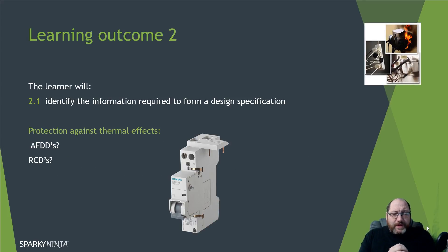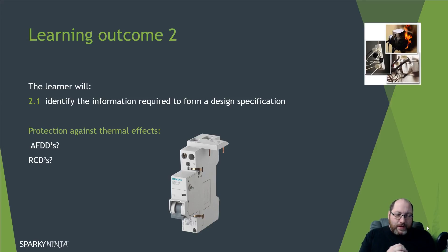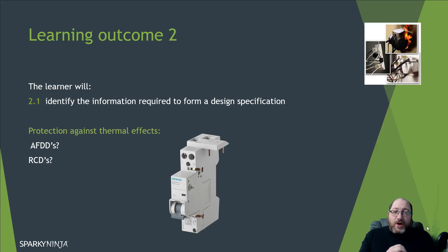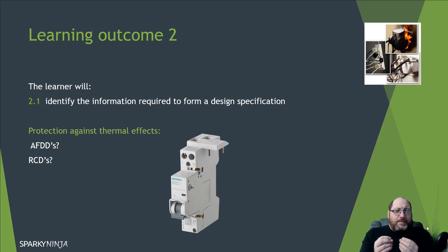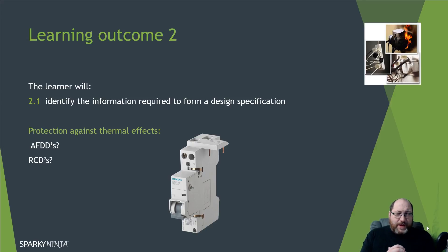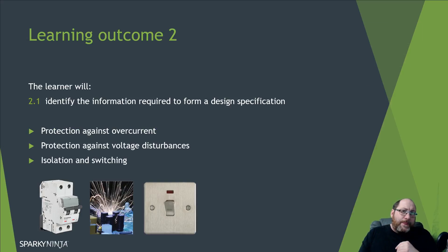We've also got to consider thermal effects. We have RCDs for fire protection — 300 milliamp at the source if needed. Coming through toward the 18th edition, there's mention of the arc fault detection device. More importantly, if there's any scenario involving a location of high significance — such as a museum or an airport — there's a much larger need to have a fire-propagating installation with MI cabling and similar. Have a look at chapter 42 to pick up on that. At the design stage, we've got to consider this need.